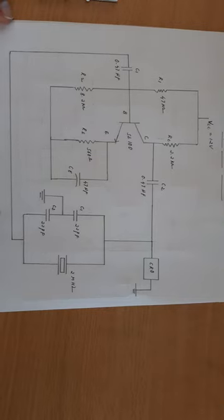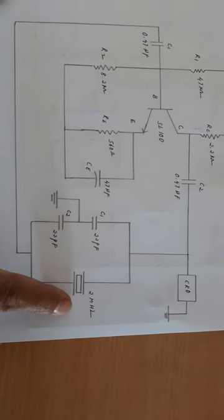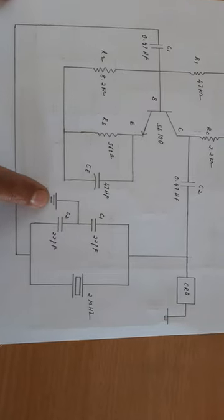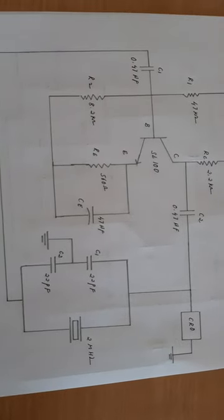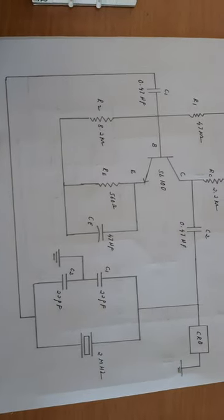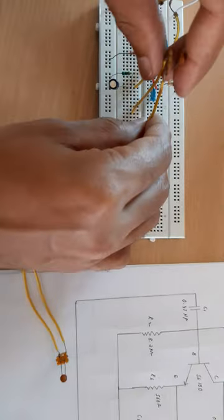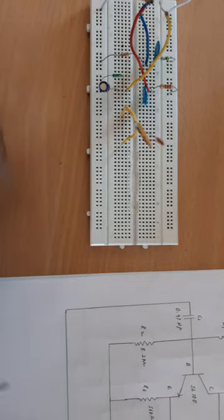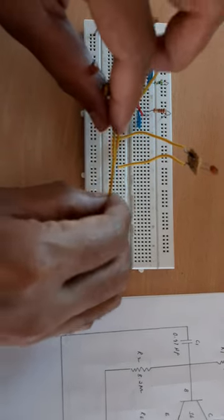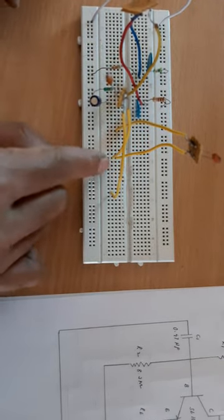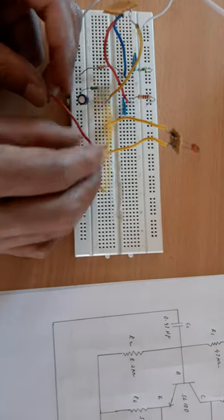Now coming back to the circuit diagram — this is the tank circuit. Here we need two 22 picofarad capacitors and one 2 megahertz crystal. In between the two 22 picofarad capacitors we need to connect one ground. I have connected one 22 picofarad capacitor and the other one here as well. Where the two 22 picofarad capacitors meet, I am connecting it to ground — so this point is grounded.